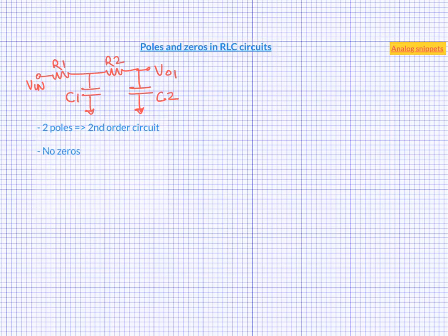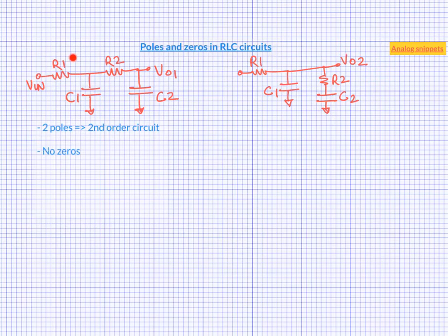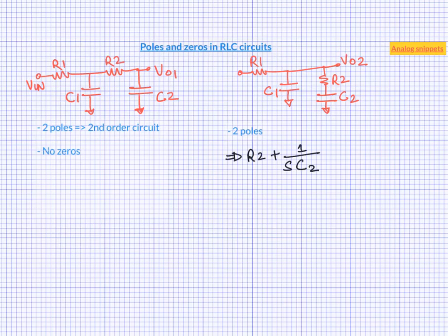So let's redraw the same circuit for better visualization. We have the same circuit again, but output is taken at a different node. Since we haven't changed anything in the circuit parameters or the topology, this circuit also has two poles located at exactly the same location as the previous circuit. But unlike the previous circuit, we now have two branches which connect output to the ground. We already know that the branch containing only a capacitor will give us a zero at infinite frequency. So let's consider the other branch — impedance of this branch is the series combination of a resistor and the impedance of a capacitor. Where S is the complex frequency, this branch will create a zero if the impedance of this branch becomes zero. So we see that the zero depends on where we are taking the output.